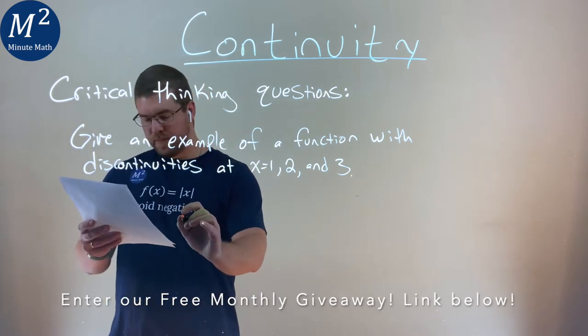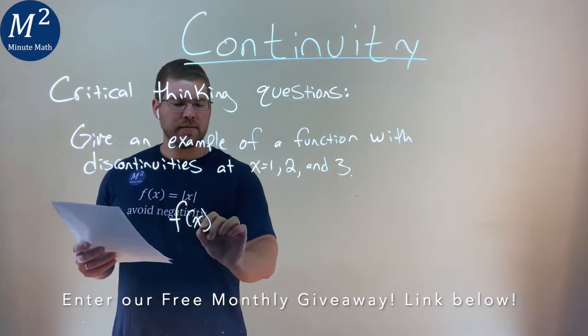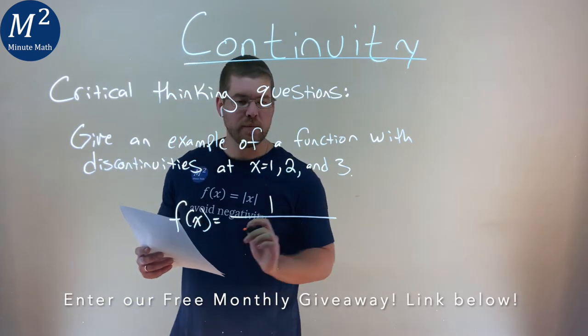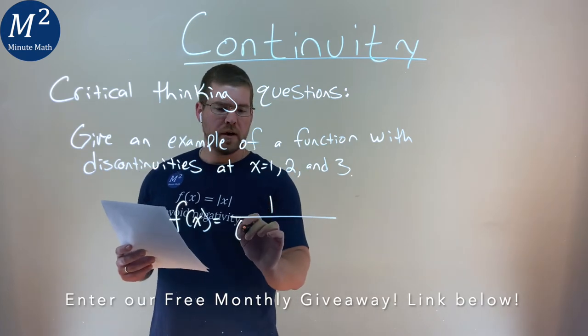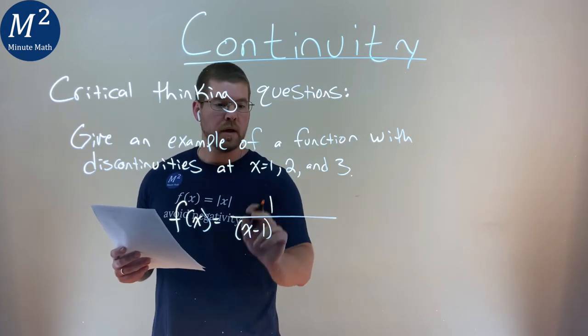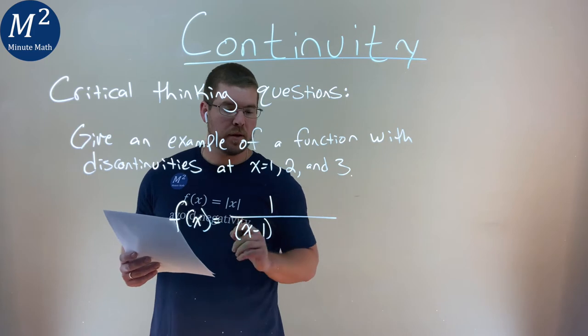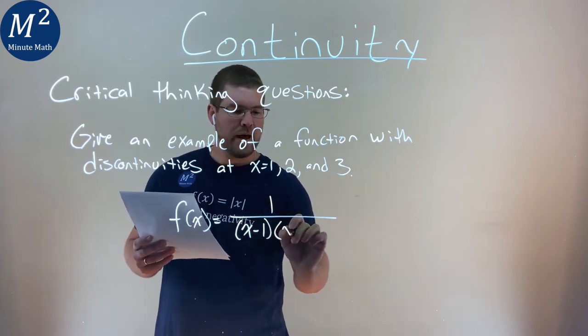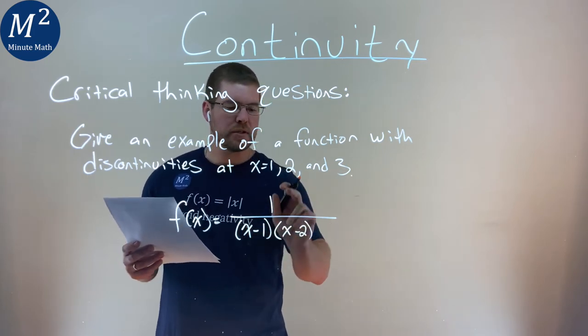So again, there are many answers, but if we say f of x equals 1 over... watch this. If I put an x minus 1, I plug 1 in, that denominator equals 0. I do an x minus 2 next to it, plug 2 in, we're dividing by 0 again.